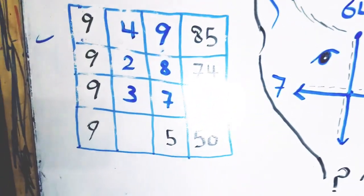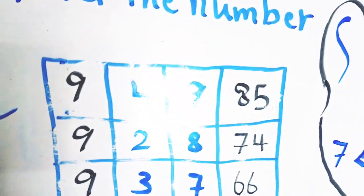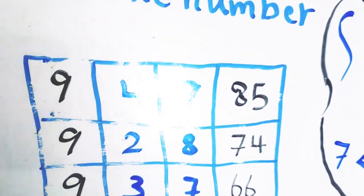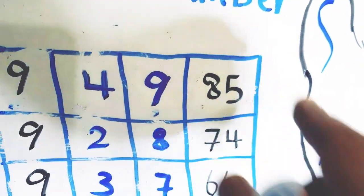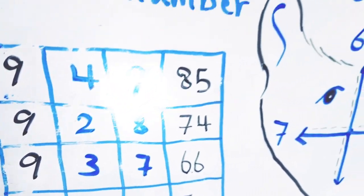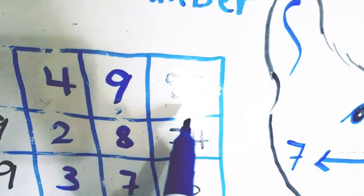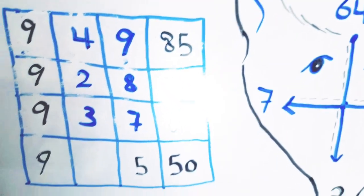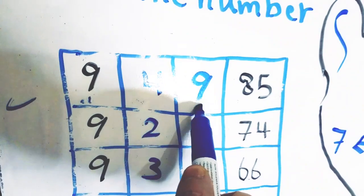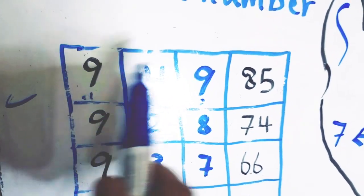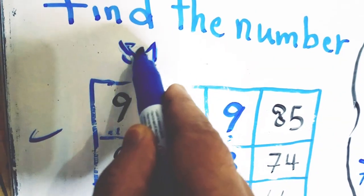In the first row we have four boxes, and all boxes are complete so we can find the rule to apply to this puzzle. In the first box we have 9, in the second box we have 4, in the third box we have 9, and in the result box we have 85. If we multiply the first box by the third box — 9 by 9 — we get 81.